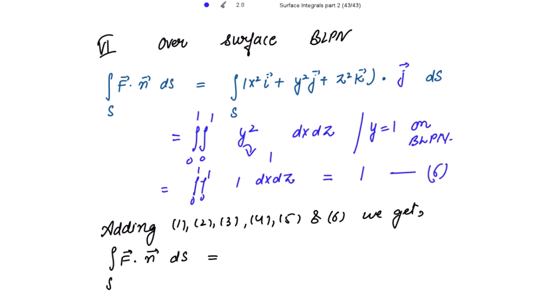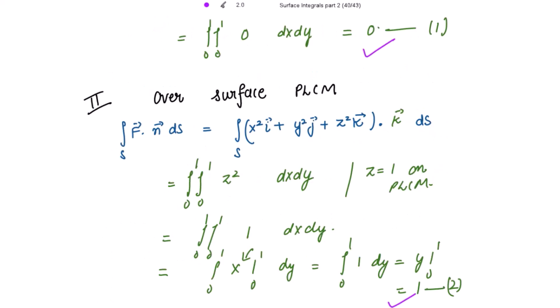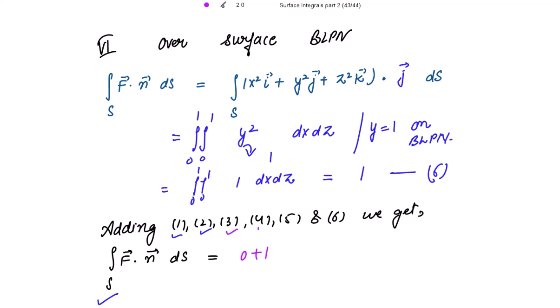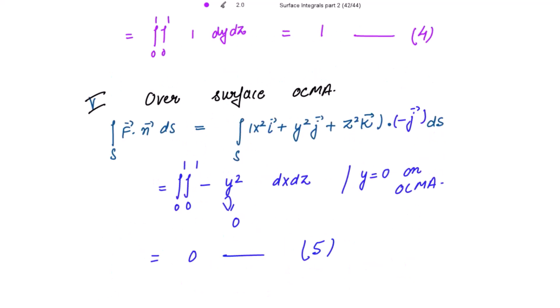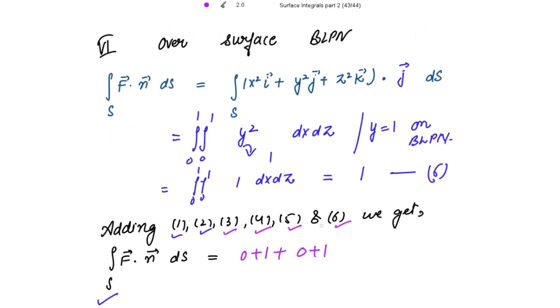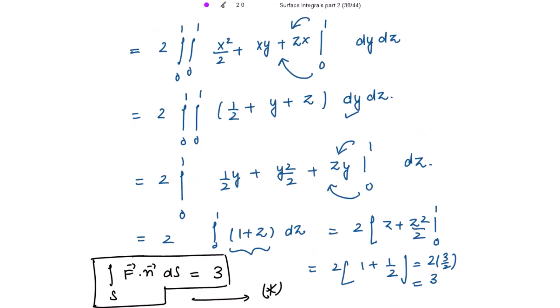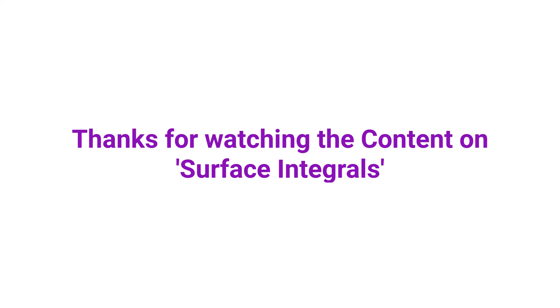Adding all 6 surface integrals together: from faces 1 and 2 we get 0 plus 1; from faces 3 and 4 we get 0 plus 1; and from faces 5 and 6 we get 0 plus 1. Adding all gives 3, which is the same result as evaluated using Gauss's Divergence theorem. Both results are equal, hence the verification is complete. Thank you.